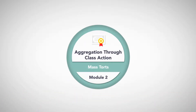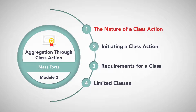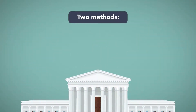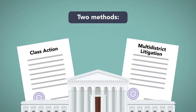Module 2: Aggregation through class action. The nature of a class action. In the federal courts, there are two methods to aggregate widespread harms from common sources: class action and multi-district litigation.